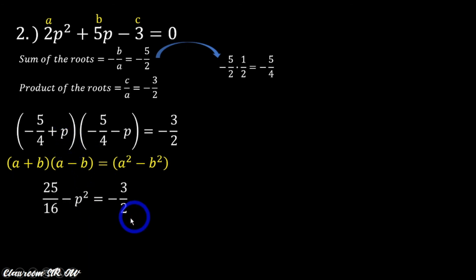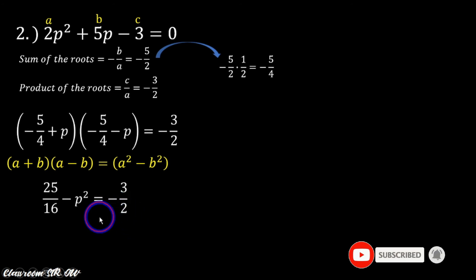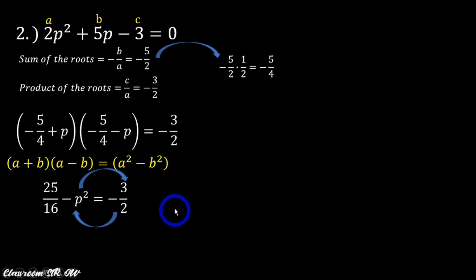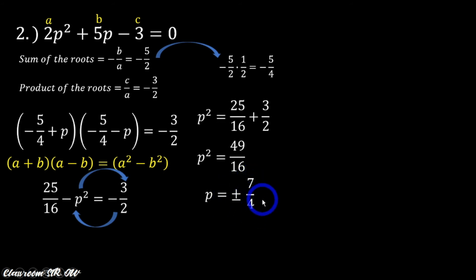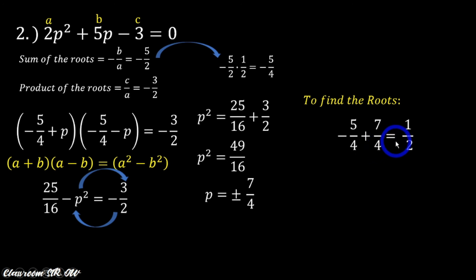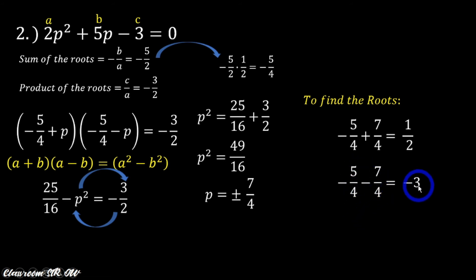Applying the difference of two squares, we square negative 5 over 4 to get 25 over 16. So 25 over 16 minus P squared equals negative 3 over 2. Transposing gives P squared equals 25 over 16 plus 3 over 2, which simplifies to 49 over 16. Taking the square root of both sides, P equals positive or negative 7 over 4. The roots are: negative 5/4 plus 7/4 equals one half, and negative 5/4 minus 7/4 equals negative 3.